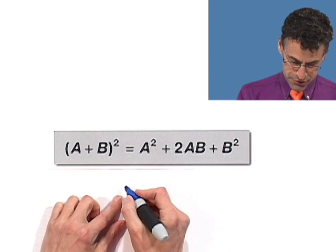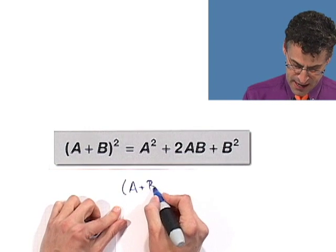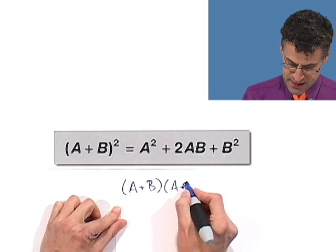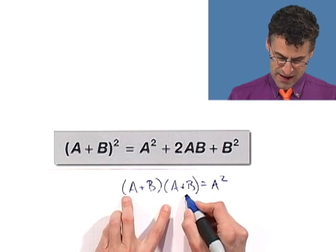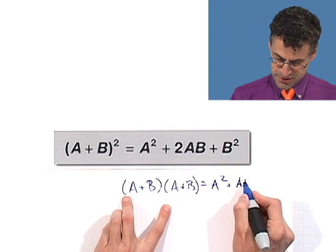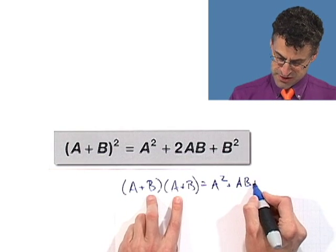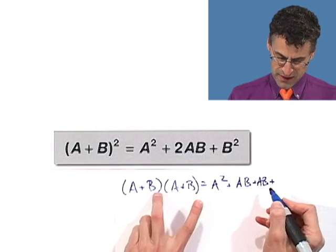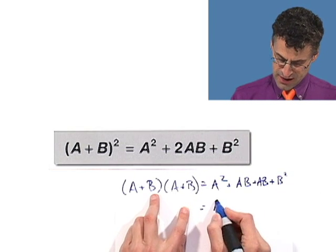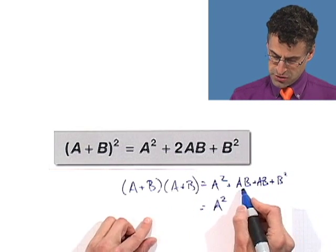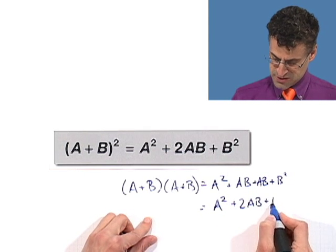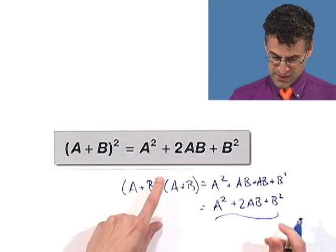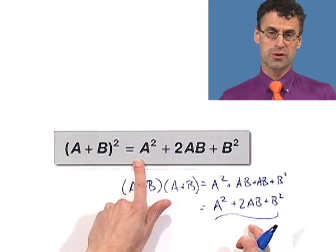Let me show you why this is true. If you take a plus b and multiply it by a plus b, then a times a is a squared. The outside term produces an ab. The inside term produces an ab. Then b times b is b squared. I've got a squared and two ab's, so that's a squared plus 2ab plus b squared. That's exactly the formula.